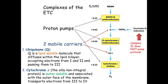Q is lipid-soluble, so when transferring electrons from Complex I or II to Complex III, it never leaves the membrane. It goes from I to III or II to III — never from I to II or II to I — and stays lipid-soluble in the membrane.